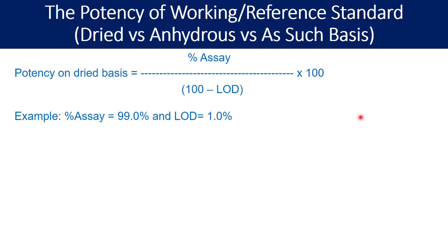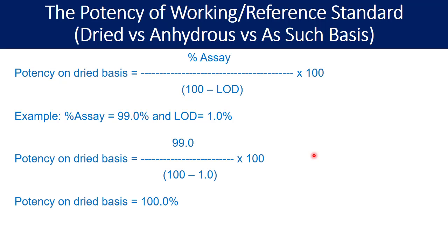Let us take one example. The percent assay is 99.0% and the loss on drying is 1.0%. You calculated the percent assay for your standard and also the loss on drying. Now you are defining the potency of the standard on dried basis. Substituting the values into the calculation formula, you will find that the potency of the standard on dried basis is 100.0%.